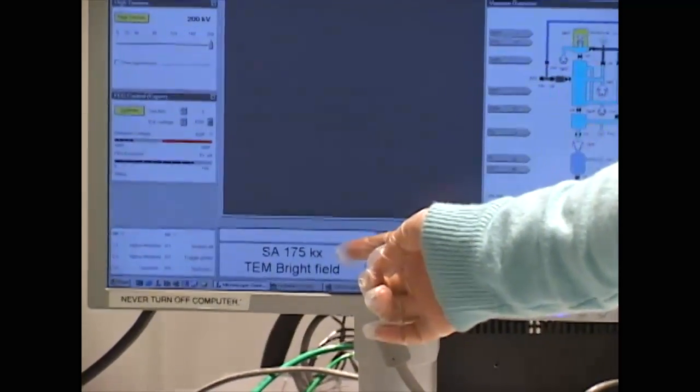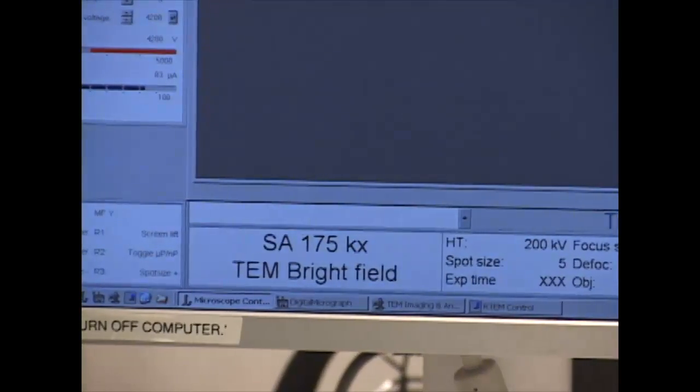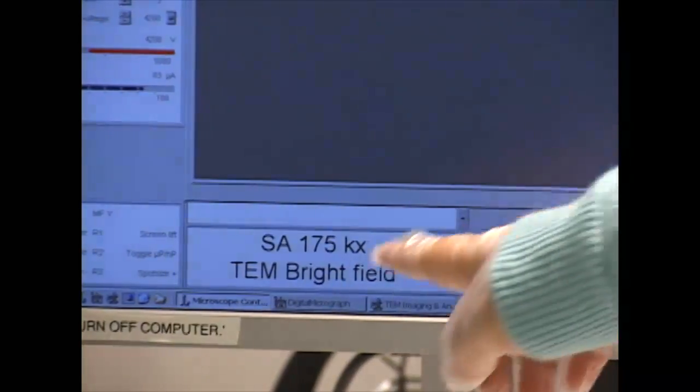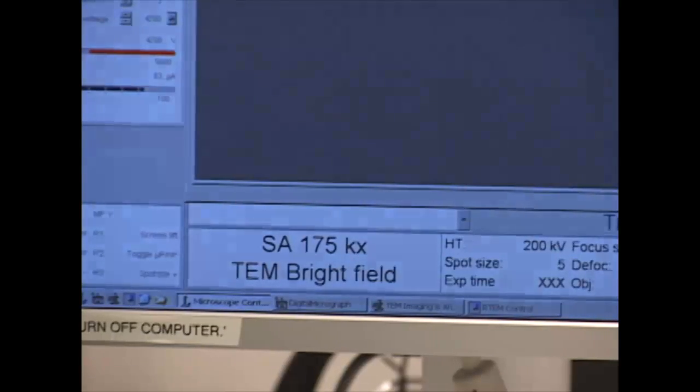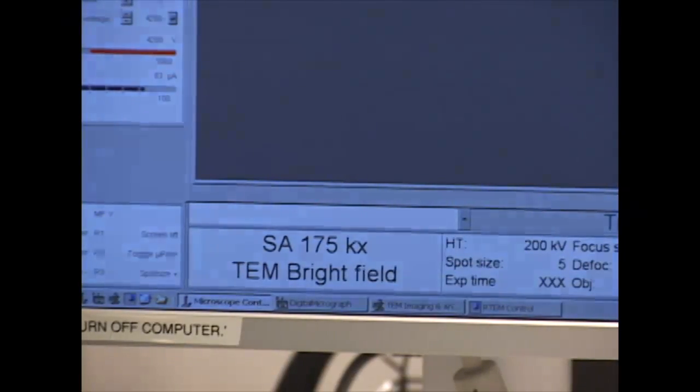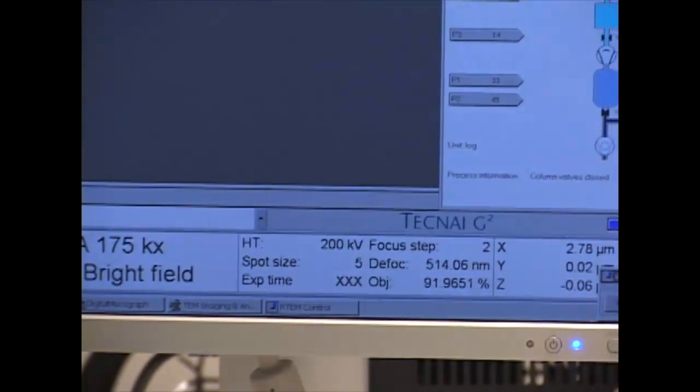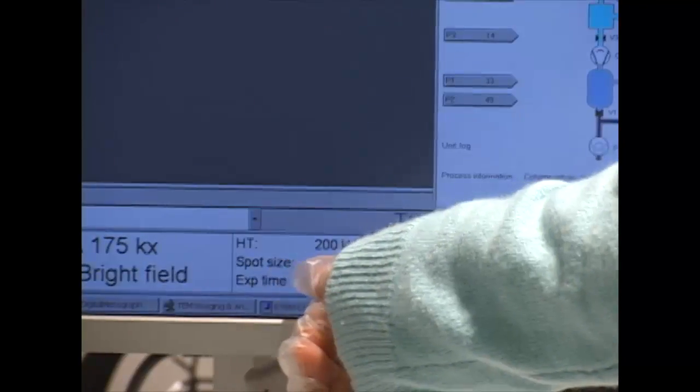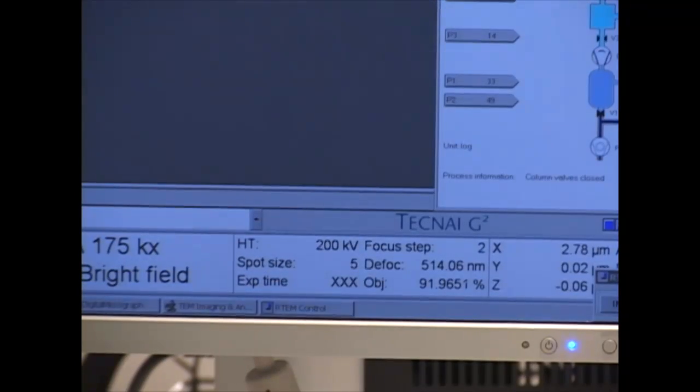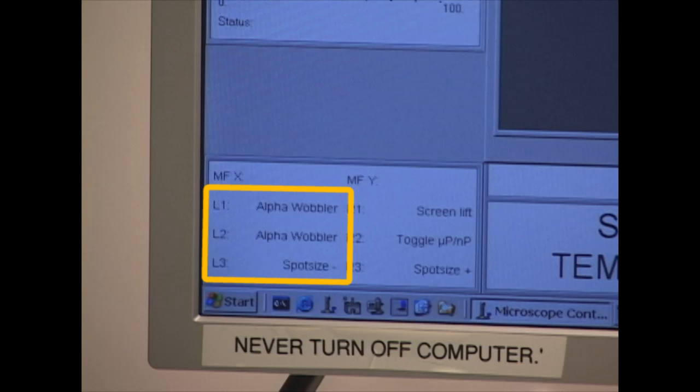In the User Interface software, the box on the lower left tells the magnification and the microscope mode. Currently, TEM bright field and 175,000 magnification. To the right, the beam energy and spot size are shown. While setting up, the spot size will be 5, and during operation, it will be 3. The exposure time tells you the brightness and illumination of the beam.